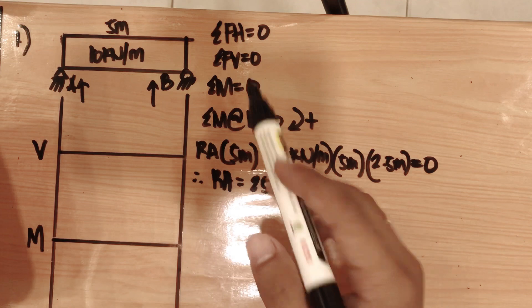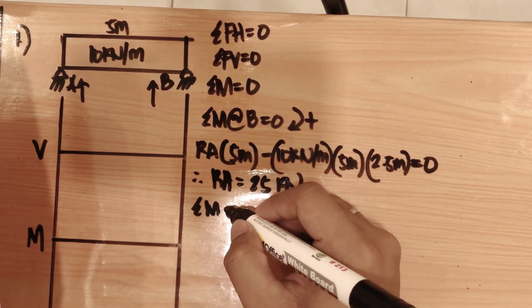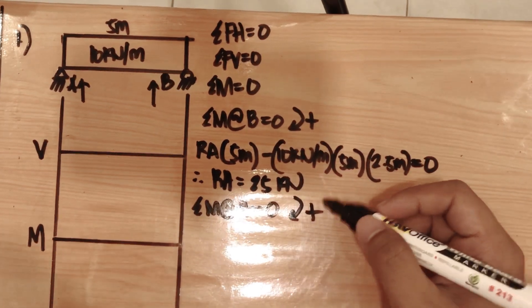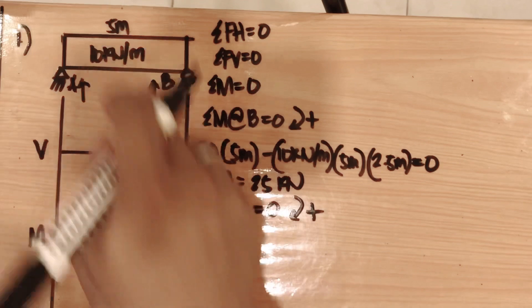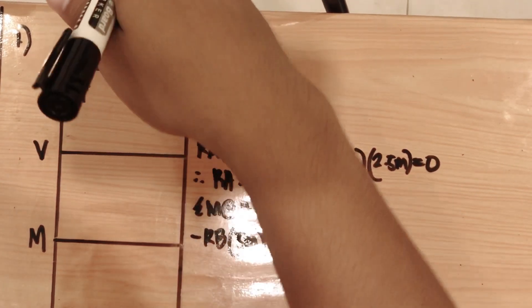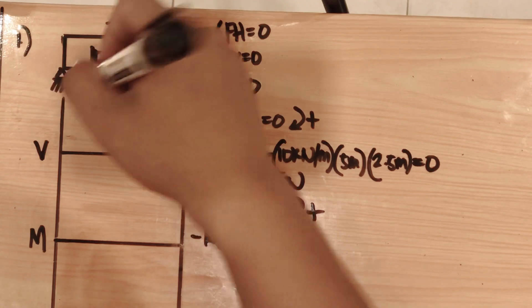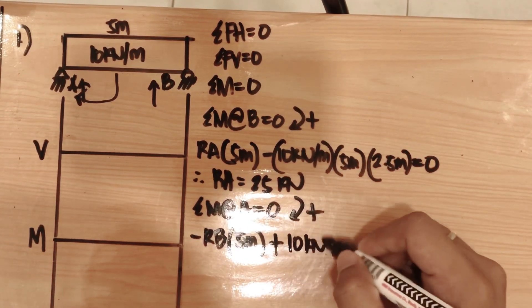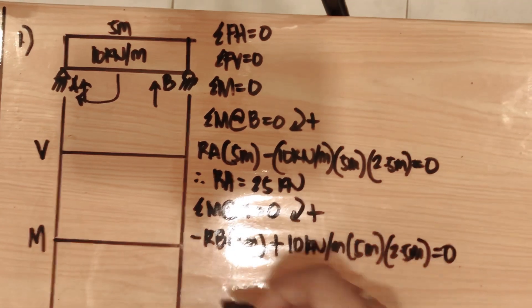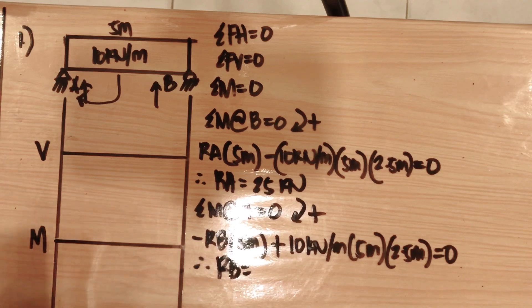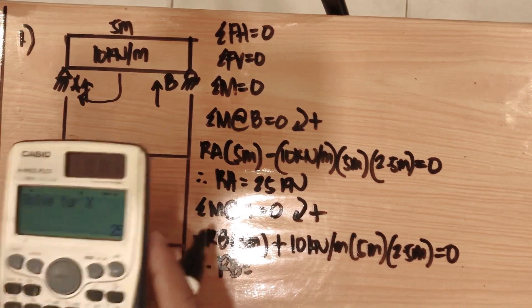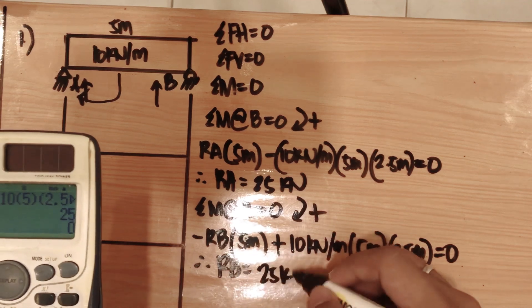For support reaction at B, summation of moment at A equals zero, clockwise positive. RB is counterclockwise, so negative RB times 5 meters, plus 10 kilonewton per meter times 5 meters times centroid 2.5 meters equals zero. So RB equals 25 kilonewtons.